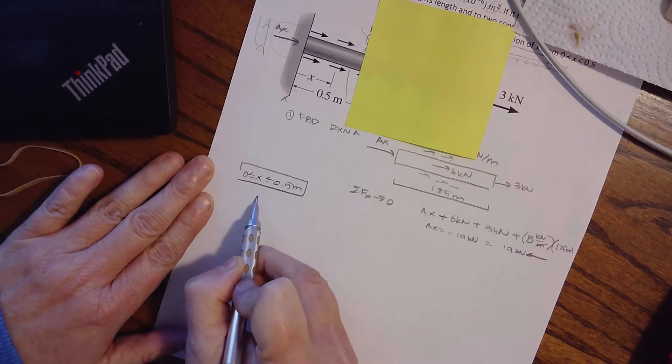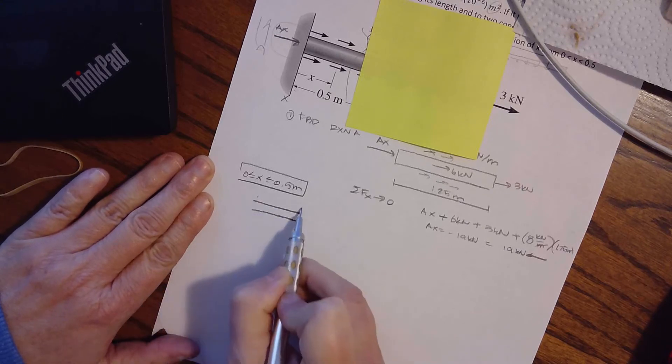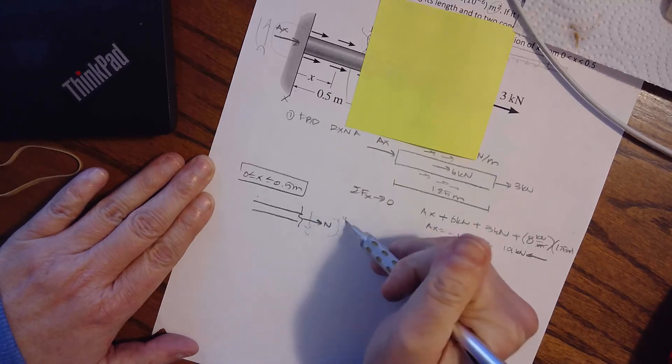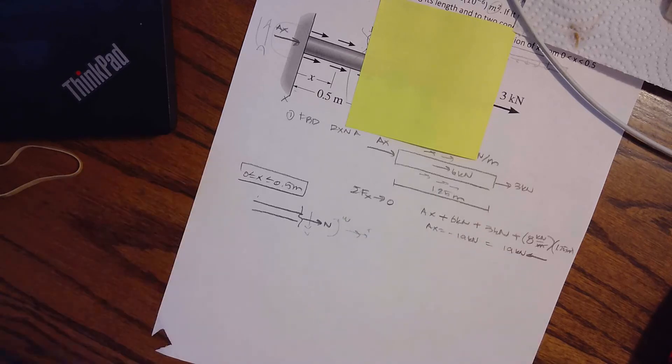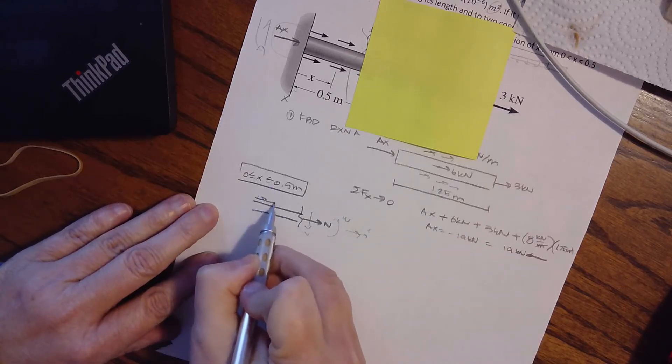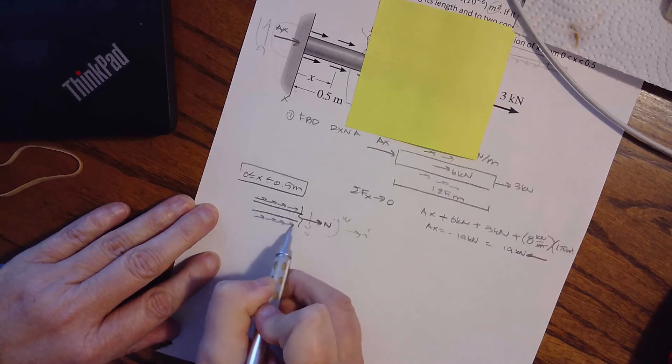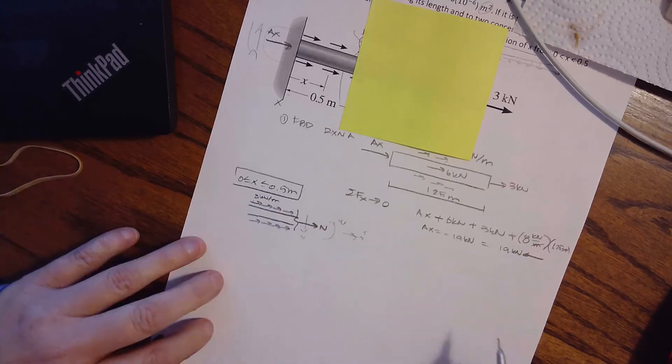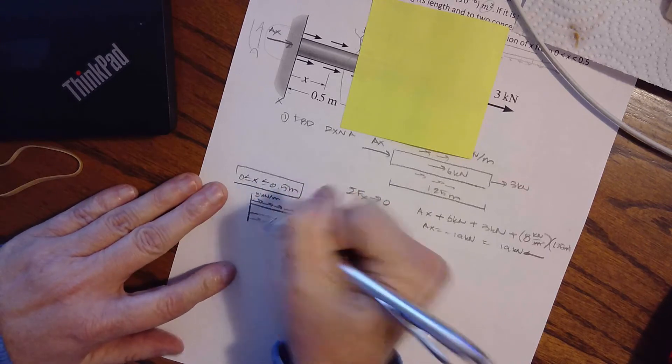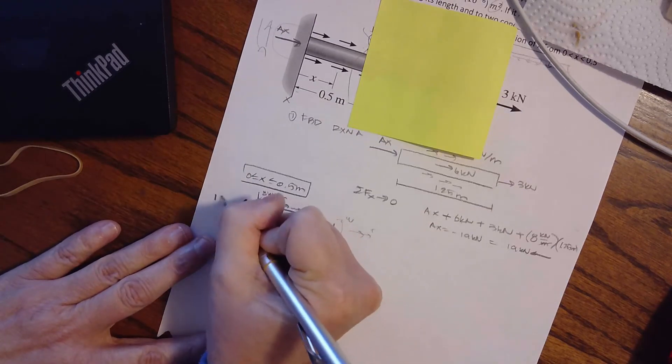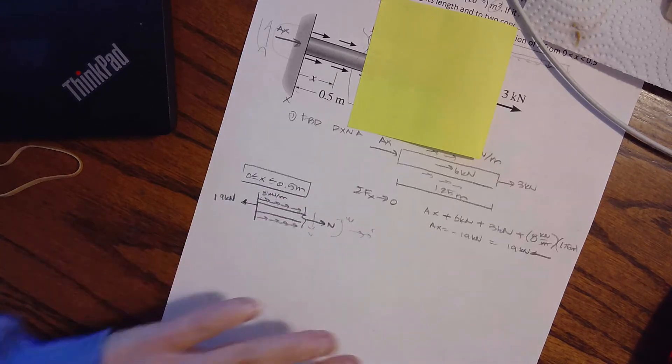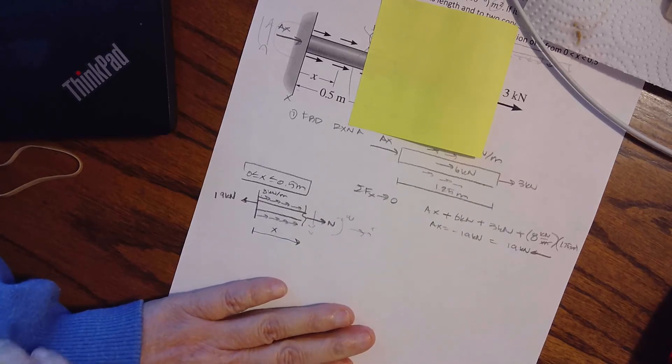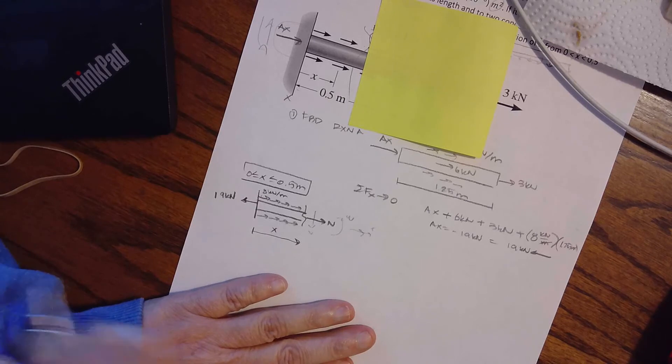So I'm going to draw my cross section. Here's my cross section. And I have that internal normal. Remember, we could also do shear and moment and torque. But right now, all we have are axial loads. I have on the outside, I have a uniform eight kilonewtons per meter. So it's just a function of how many meters I have. And then I have this 19 kilonewtons acting to the left. That is my reaction. X always starts at the left-hand side and goes to my cut.